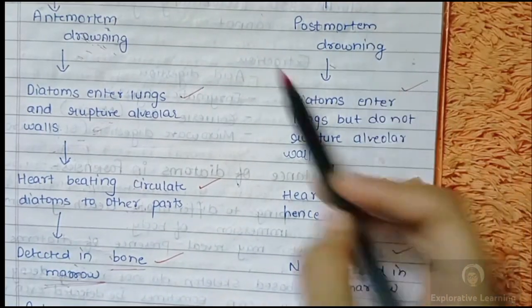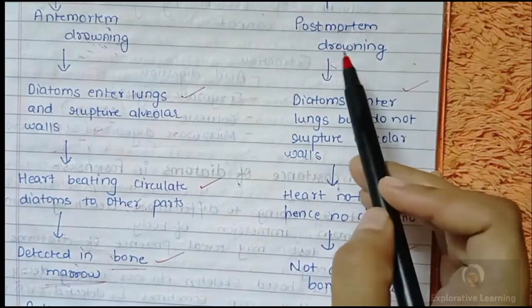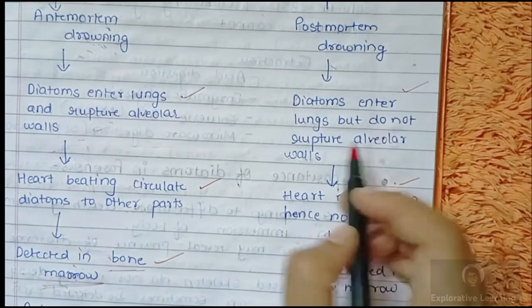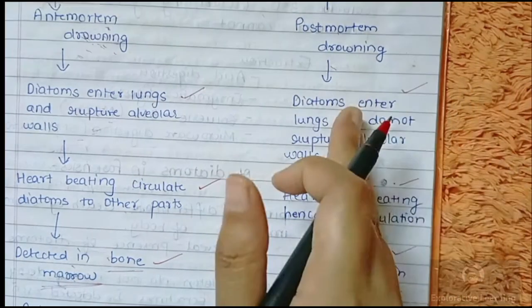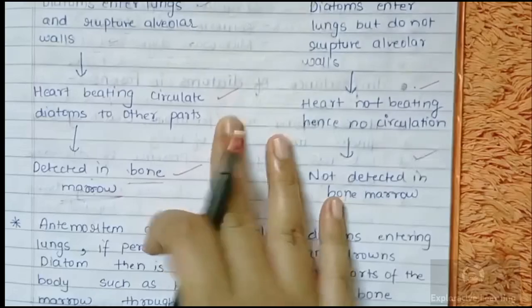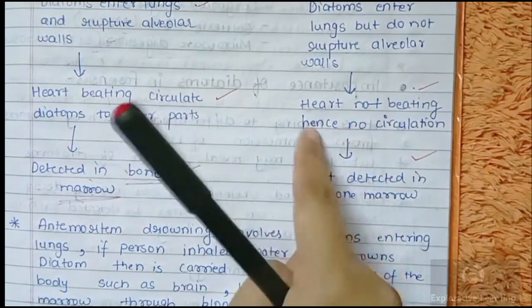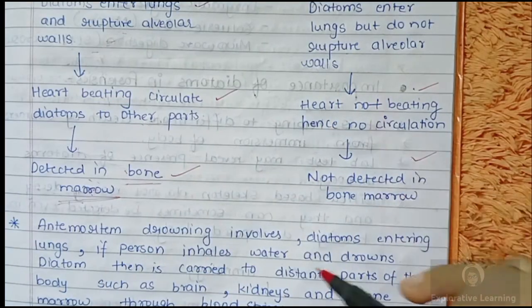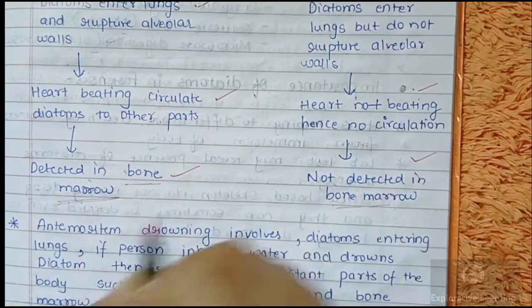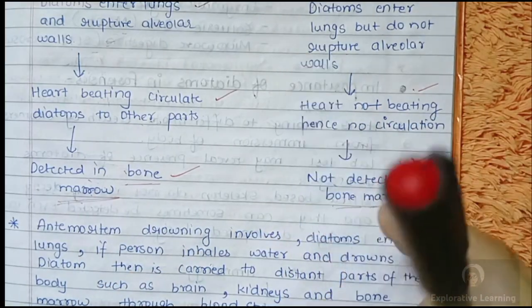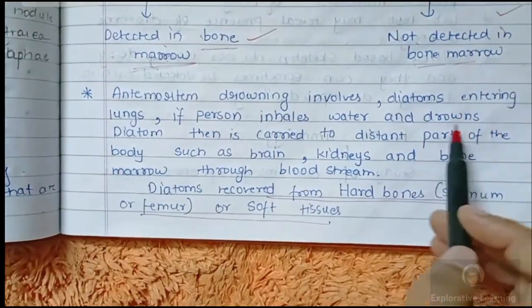In postmortem drowning, where the body is thrown into the water after death, diatoms may enter the lungs but they do not rupture the alveolar wall, because the person is not breathing. Since the person is already dead and the heart is not working, there are no chances of diatoms being transmitted to another part of the body via circulation. Therefore, no diatoms would be found inside the bone marrow.